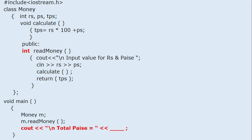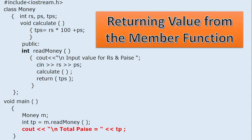Since we are returning a value, we have to receive it in the main program — declaring integer tp. When this statement is executed, it goes to execute read money, which does everything and returns TPS. The value of TPS will be given to tp. Here TPS is a member variable inside the class, and tp is a variable declared in the main program. Now we can display the value of tp. This concept is called returning value from the member function — or returning value from a class.